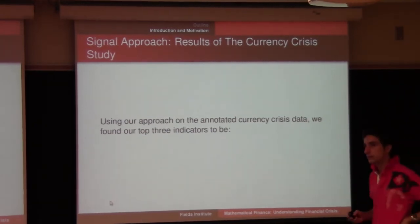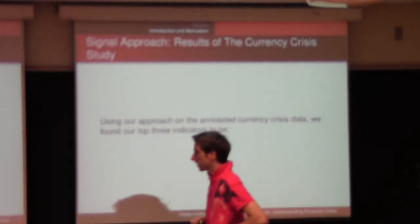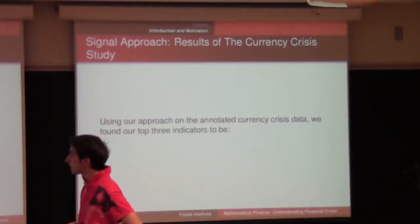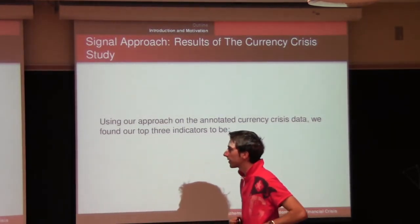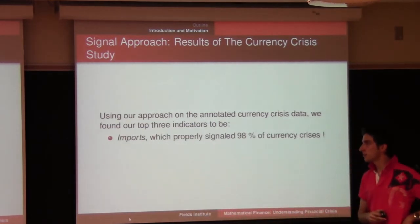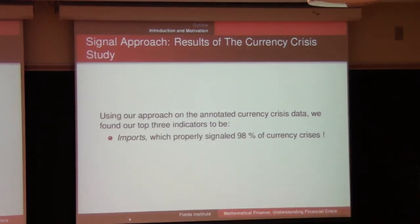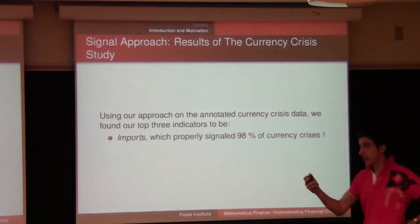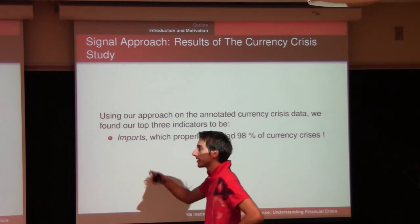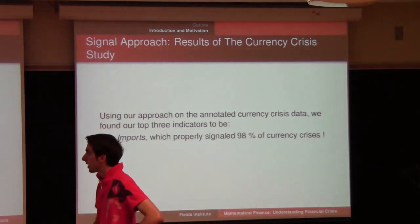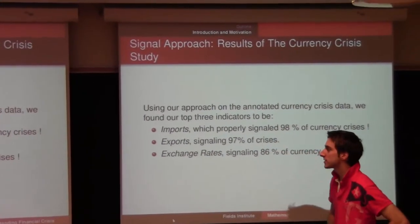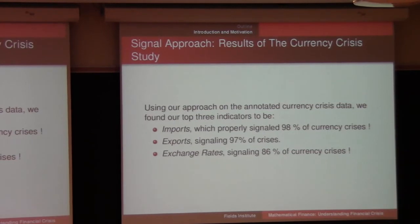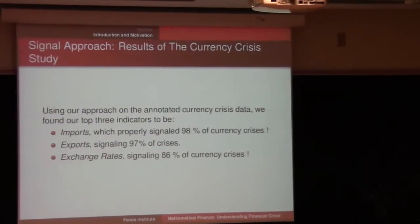Using our approach on currency crises over the past 100 years, we found the top three economic indicators. Imports signals 99% of currency crises. Exports signals 95% of crises, which makes sense. Exchange rates signals 86% of currency crises. We applied this approach to banking crises and other types of crises as well, with strong results.